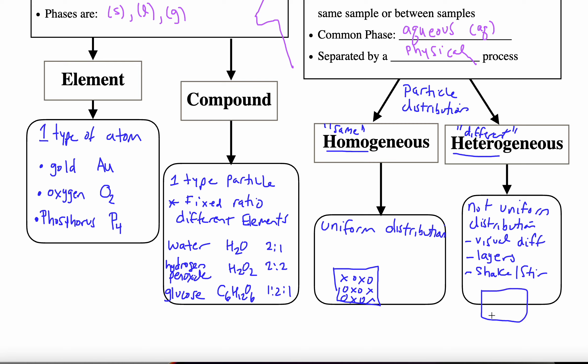So if I was to draw a picture here, I would have one type of particle creating a layer and then a different type of particle would create another layer. So it's not equal distribution through the entire container.